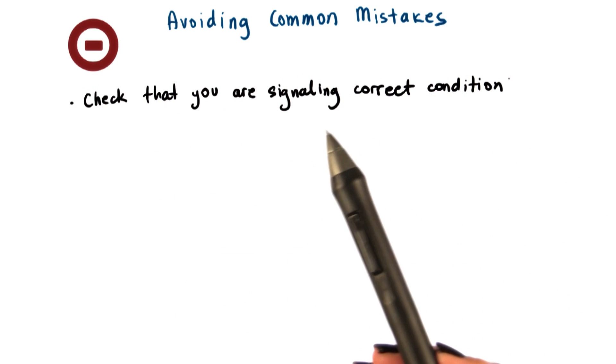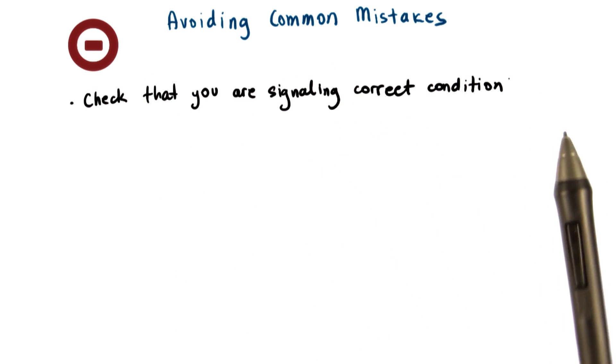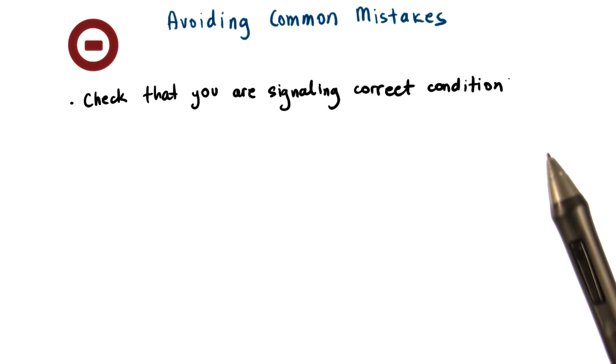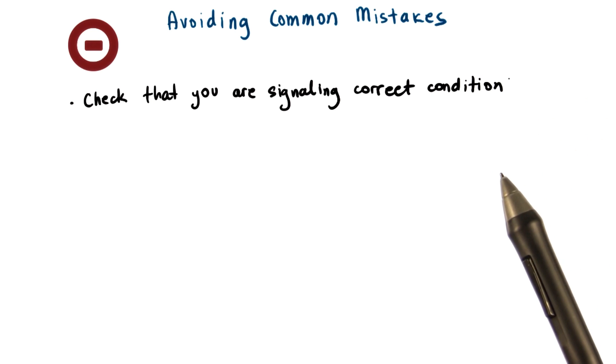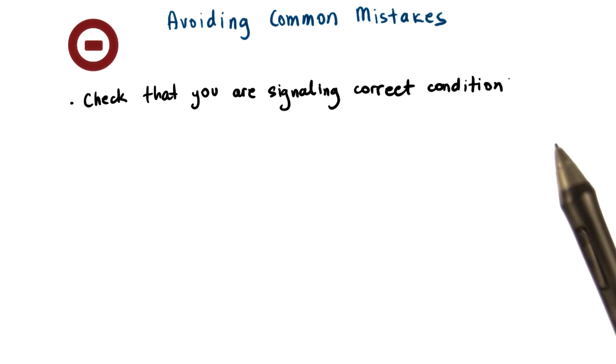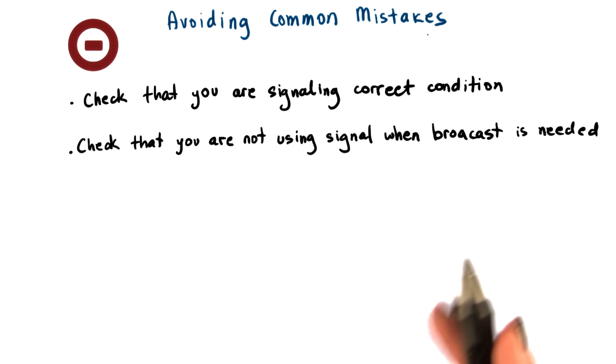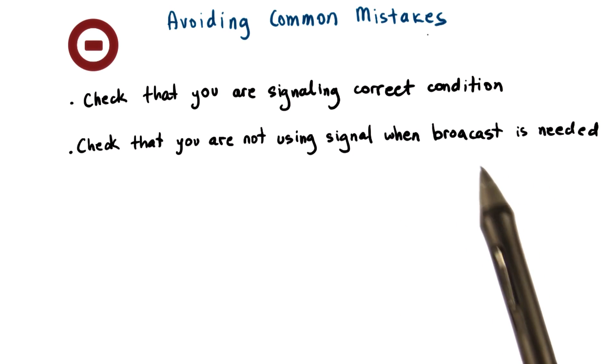Also, it's important to make sure that when you're using a signal or a broadcast, you're actually signaling the correct condition. That's the only way that you can make sure that the correct set of threads are potentially going to be notified. Again, using comments when you're declaring these conditions can be helpful. Also, make sure that you're not using signal when you actually need to use broadcast.